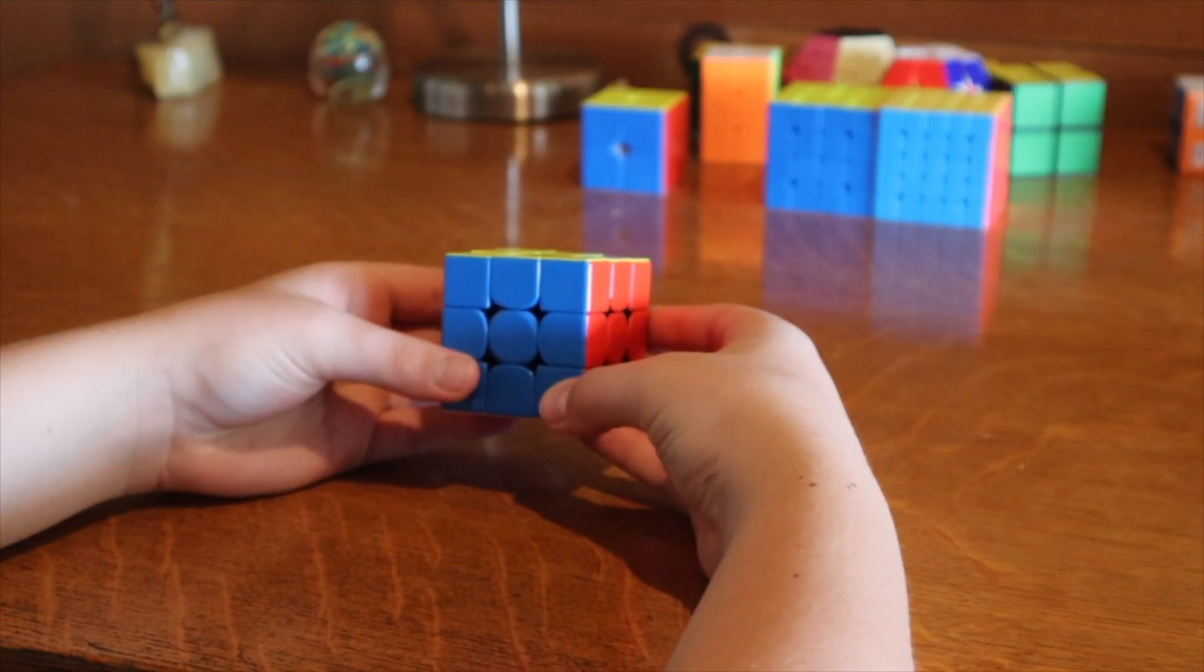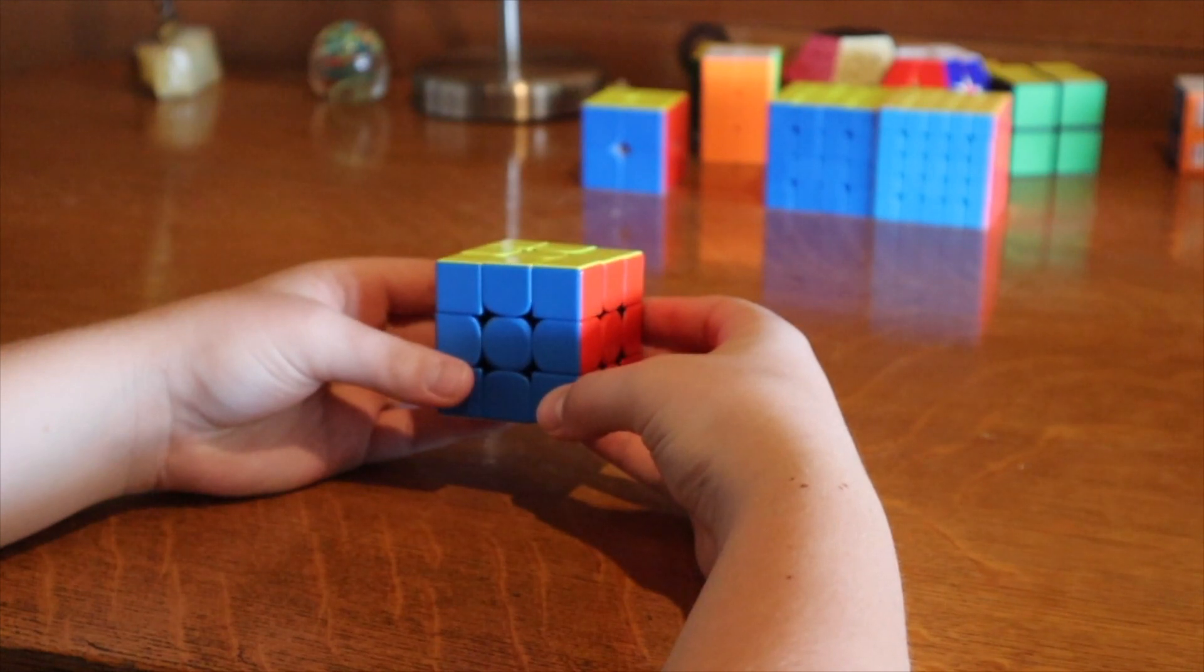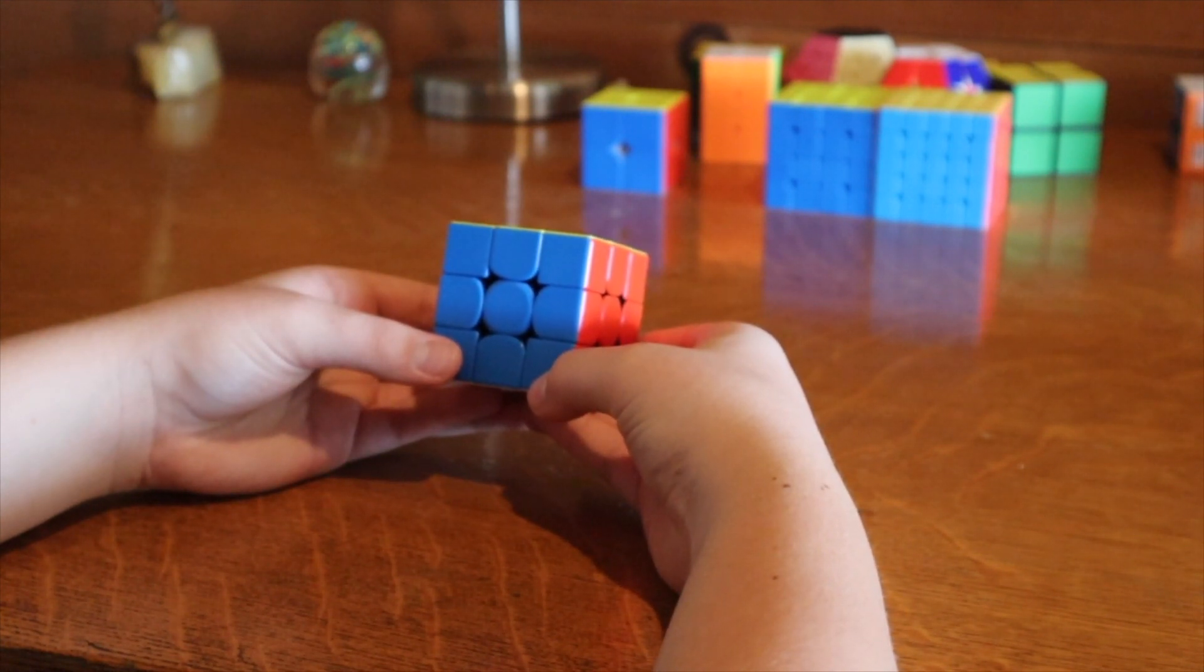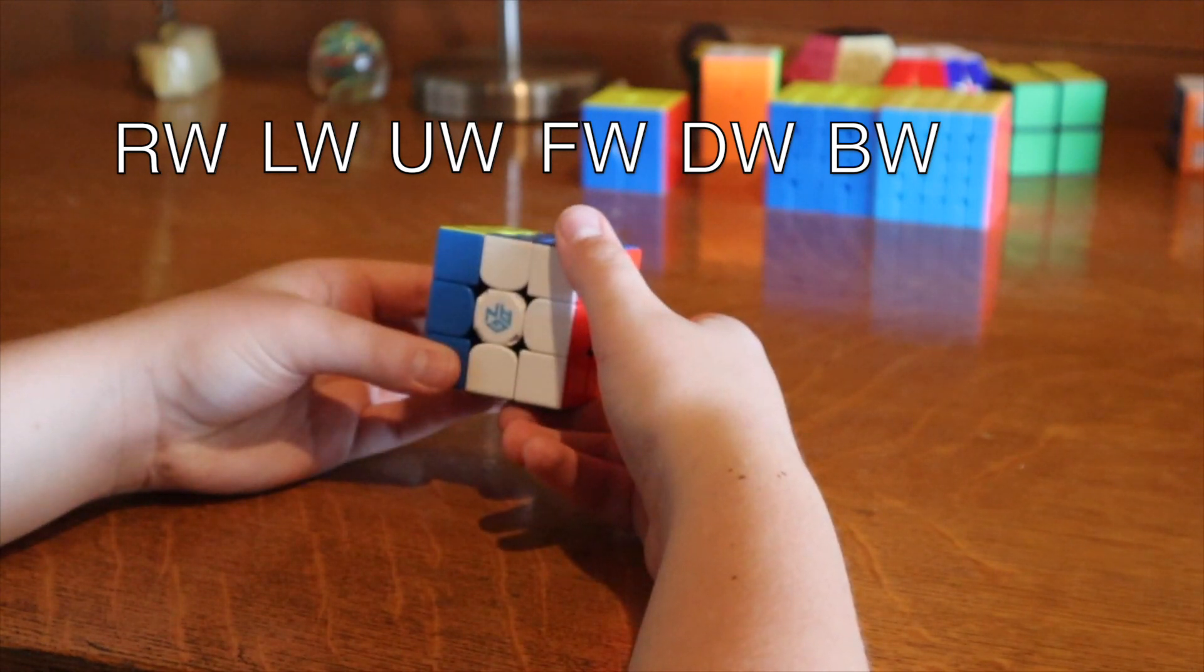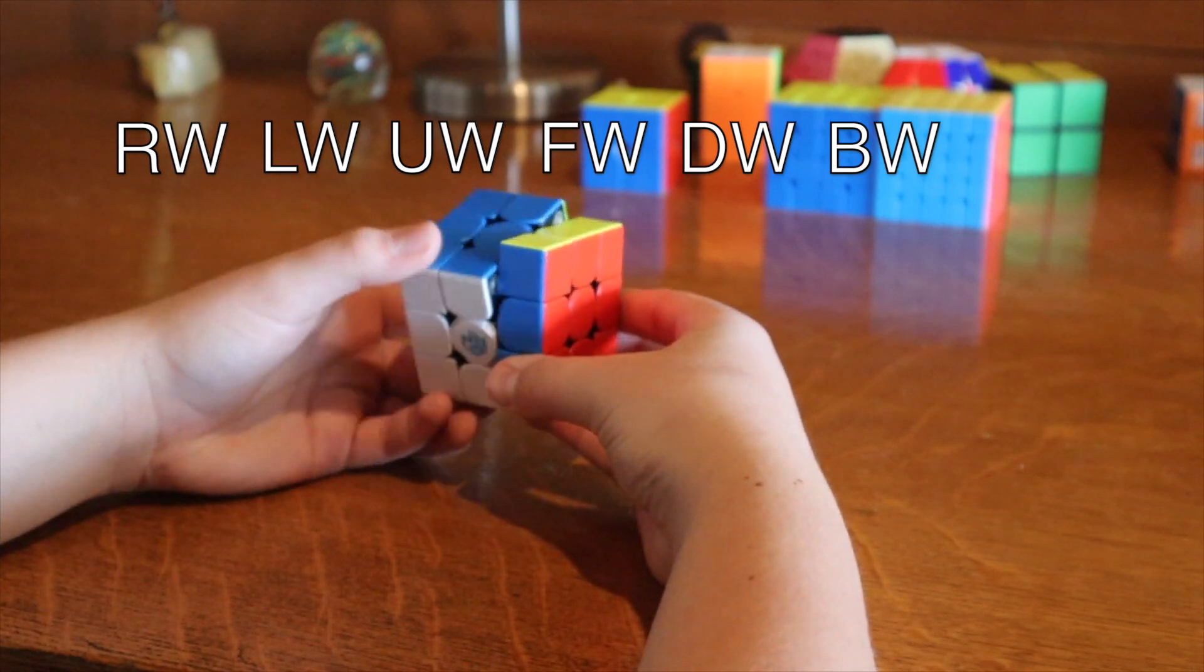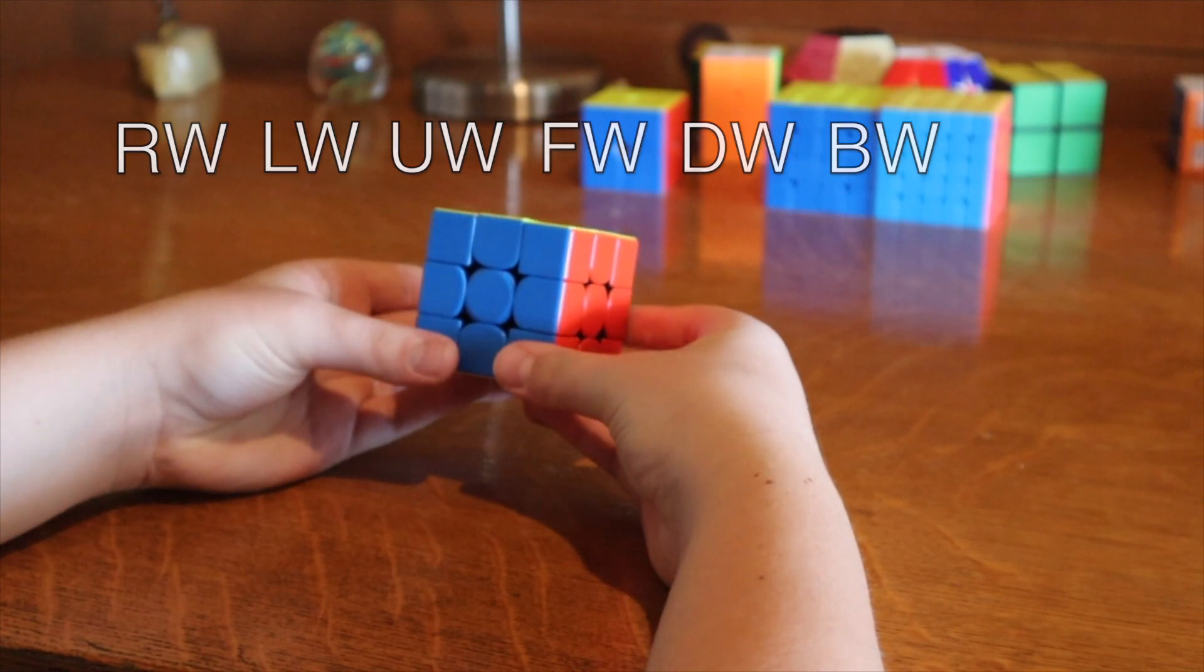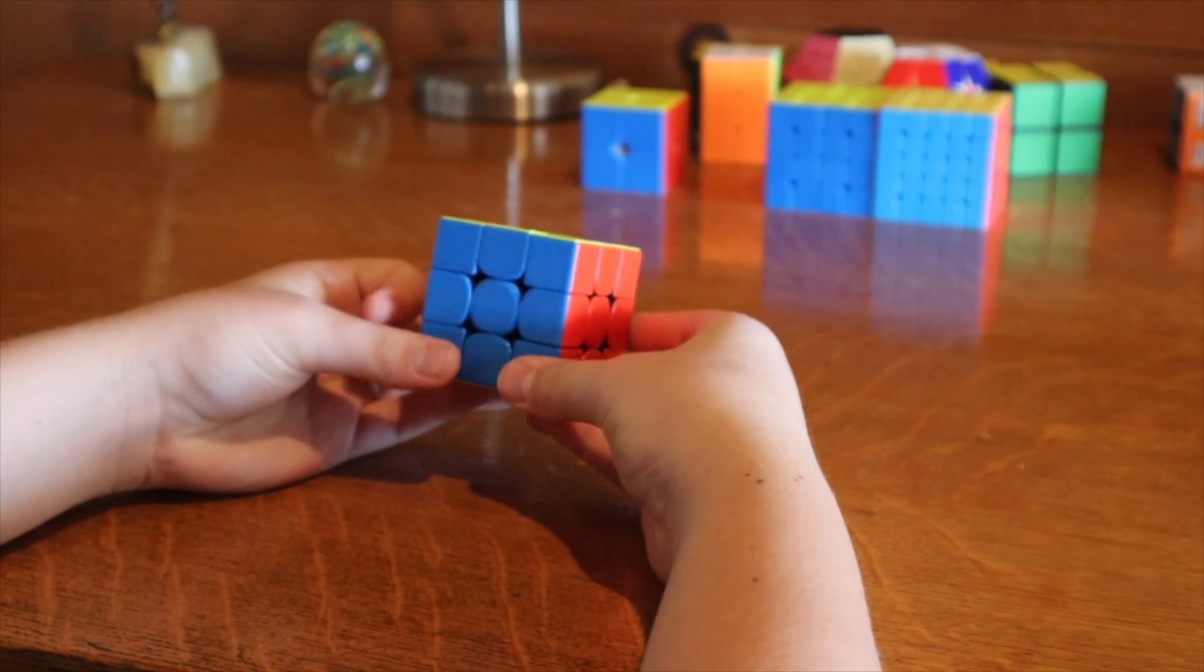The other turn used for 3x3 is called a wide turn. A wide turn means you turn two layers at once. For example, R wide, L wide, U wide, and so on.